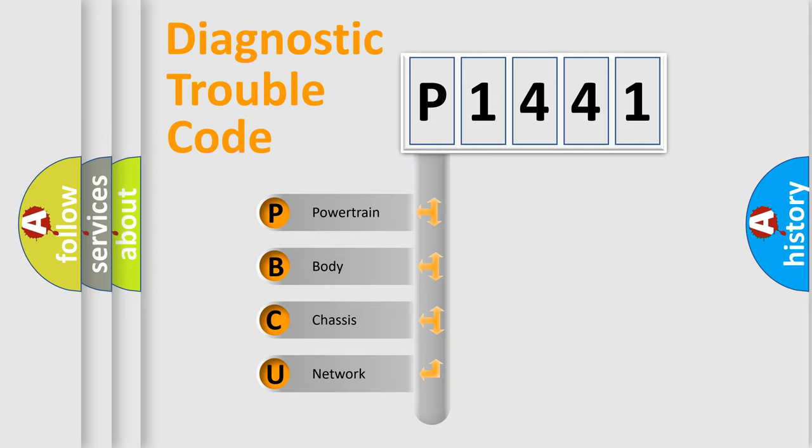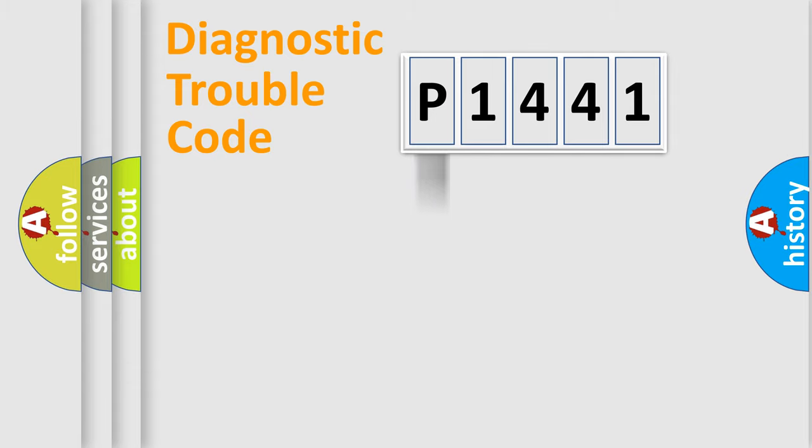We divide the electric system of automobile into the four basic units: Powertrain, Body, Chassis, Network. This distribution is defined in the first character code.